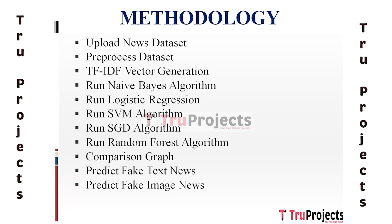The second module is Pre-processed Dataset. In this module the raw news dataset is pre-processed to clean and transform the text data into a suitable format for analysis. Pre-processing steps include removing stop words, special symbols, and other irrelevant characters. Additionally, stemming and lemmatization techniques may be applied to normalize words and reduce them to their root form, preparing the text data for feature extraction and model training.